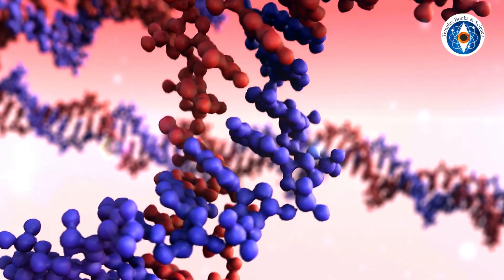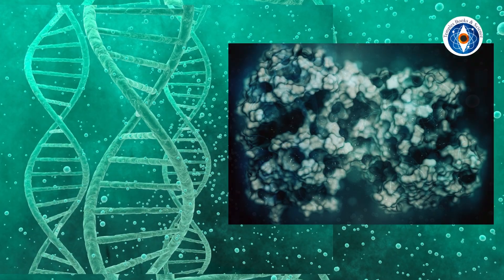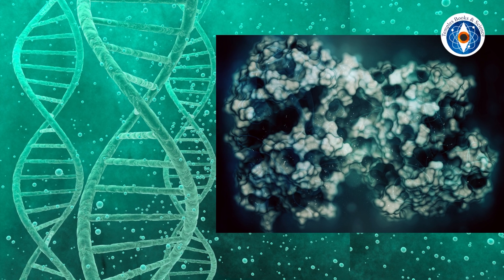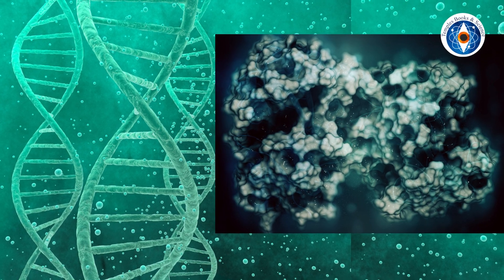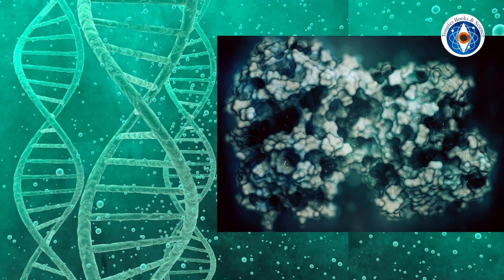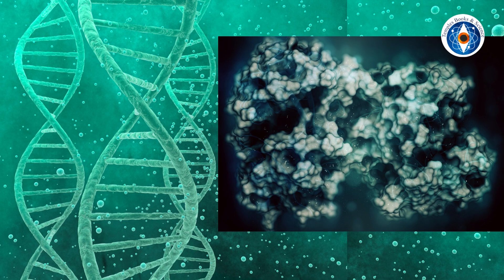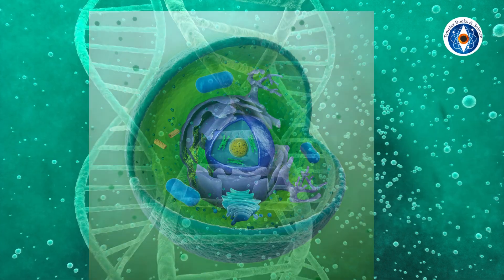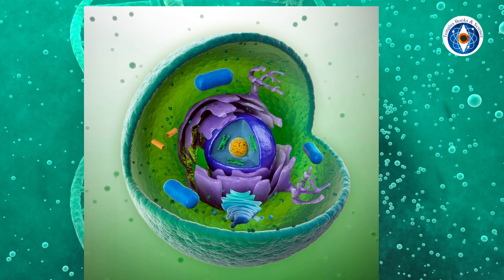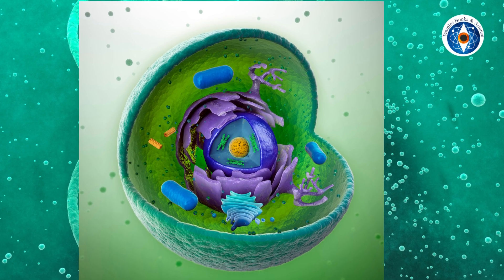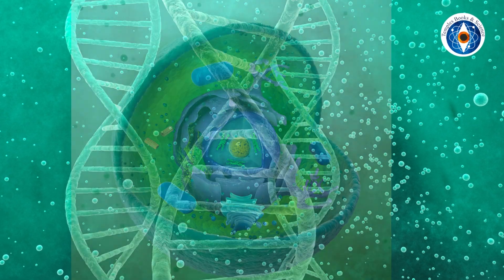So, we have a paradoxical situation. Proteins cannot exist without DNA and DNA have no purpose without proteins. So, the question is, did they arise simultaneously for the purpose of supporting each other? Both DNA and protein cannot function outside the confines of a cell. And the cell has no purpose without DNA and protein. Think about it for a second. If everything needs everything else, how did this community of molecules arise in the first place?